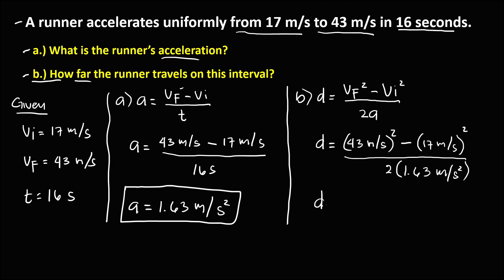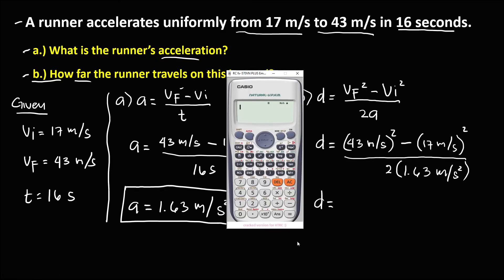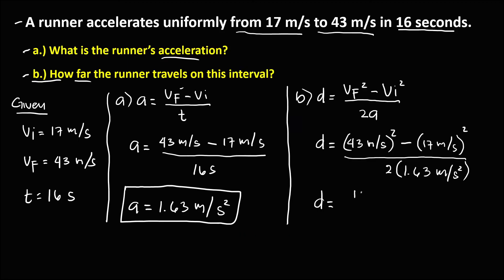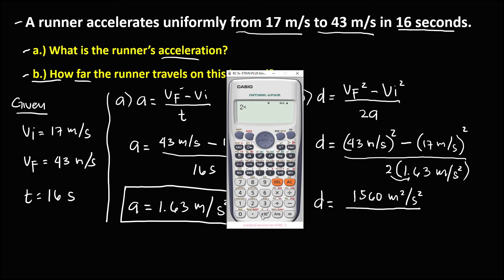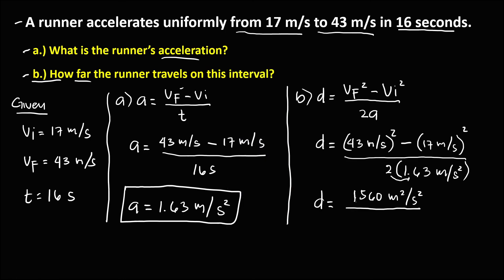So we have 43 squared minus 17 squared, which equals 1560 meters squared per second squared. Then we divide by 2 times 1.63, which equals 3.26 meters per second squared.